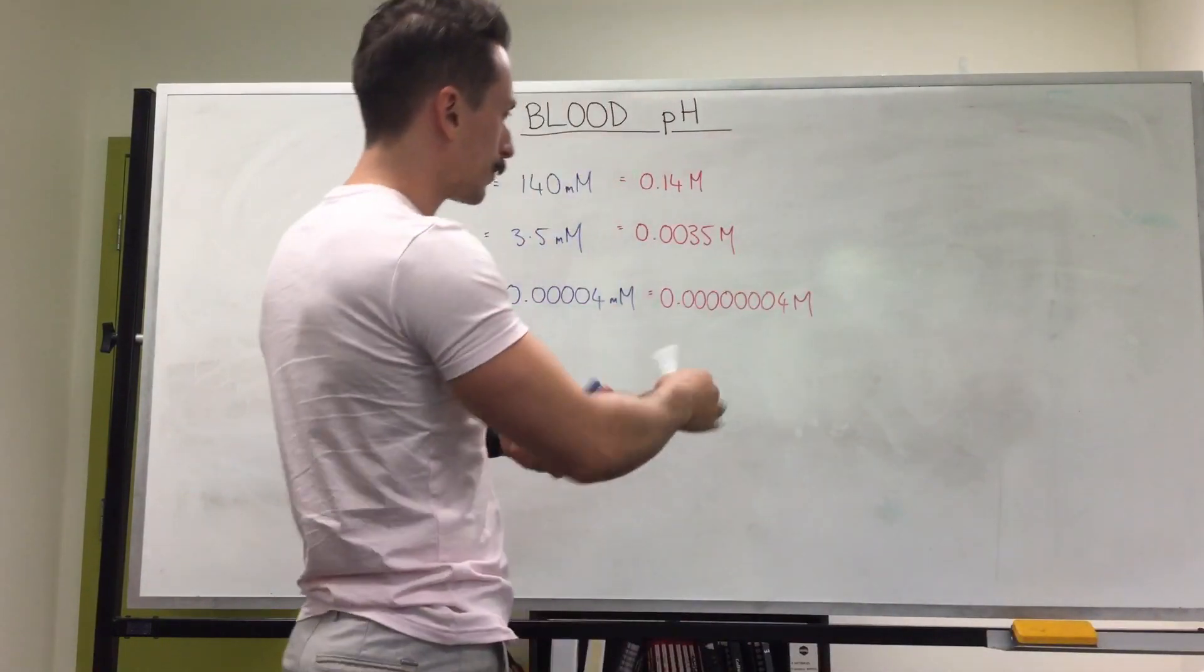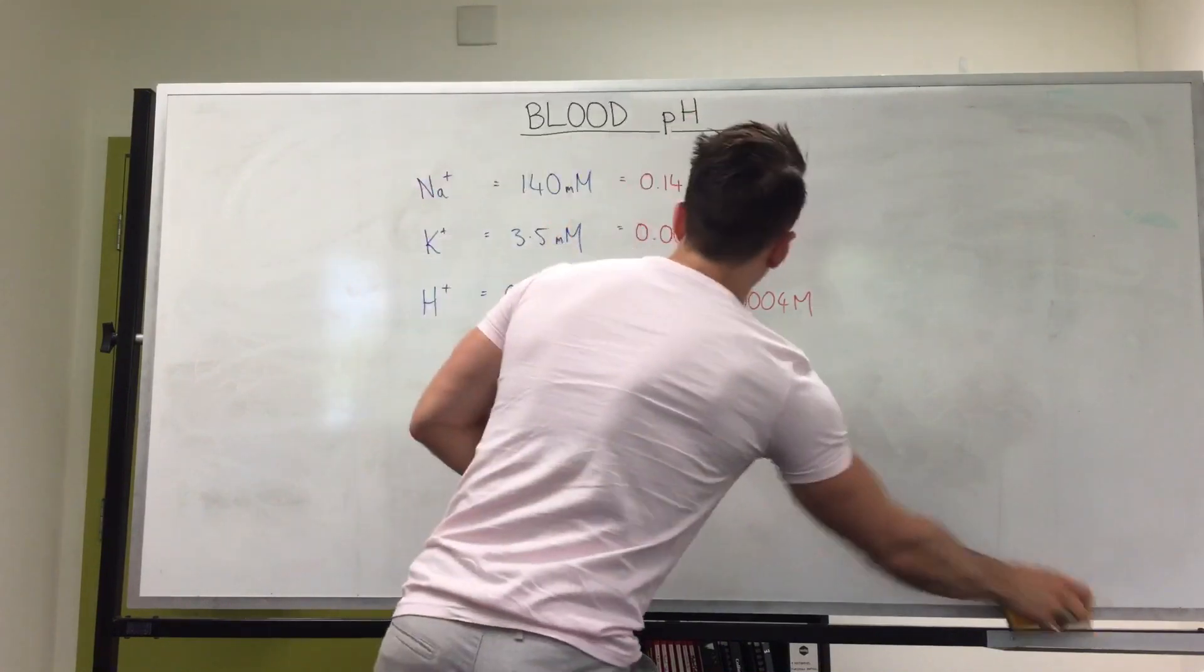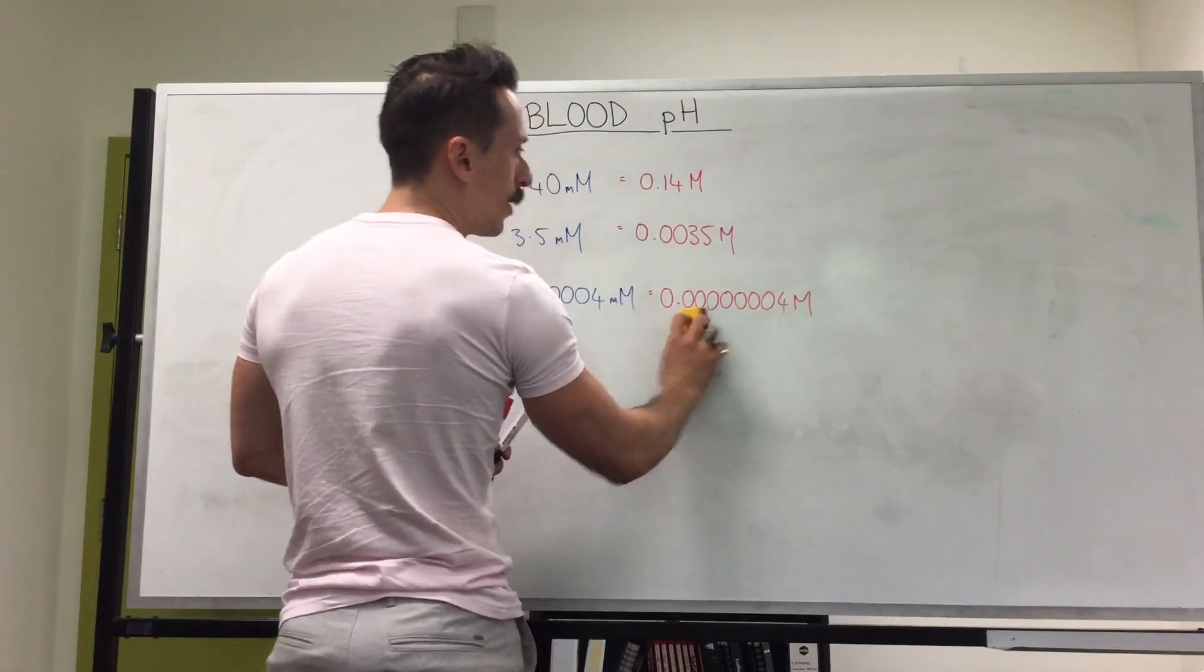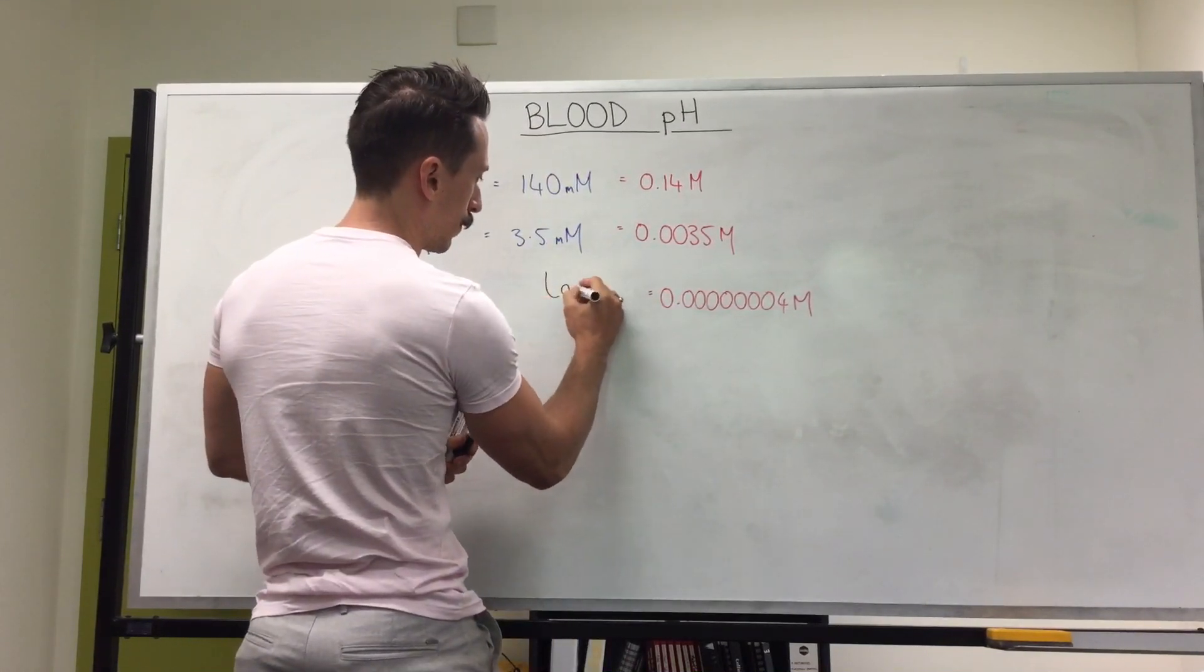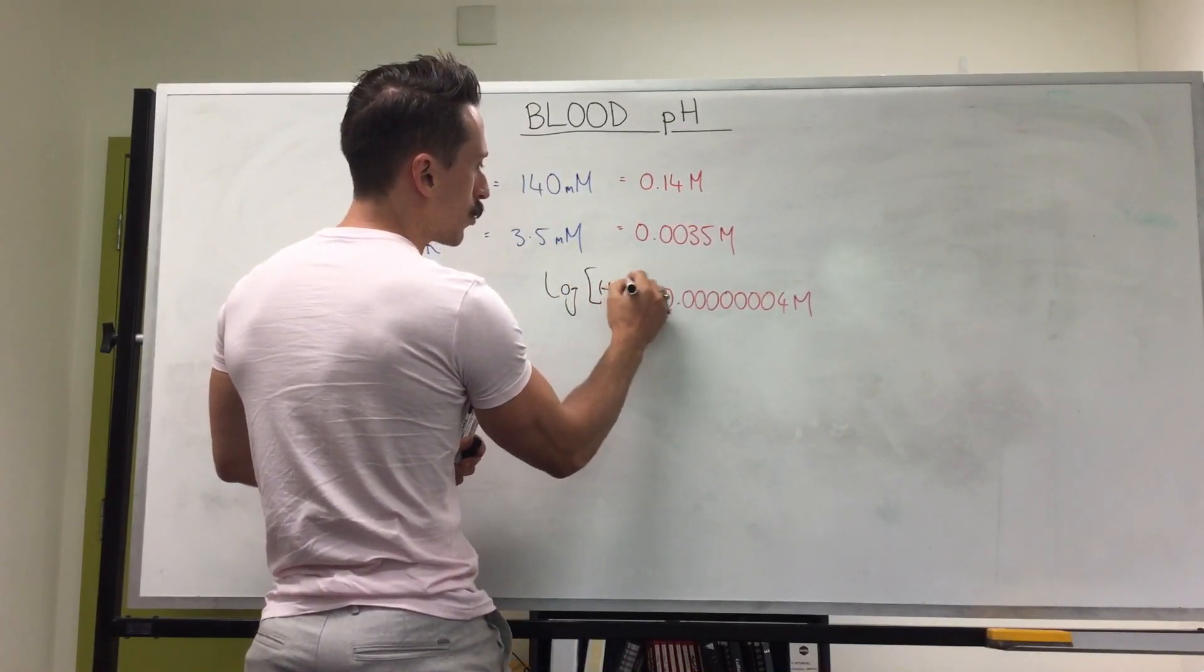If you were to get your calculator out and you were to write down this number here, 0.00000004 and write the log of it. So if you write the log of hydrogen ion concentration, pop it in your calculator,